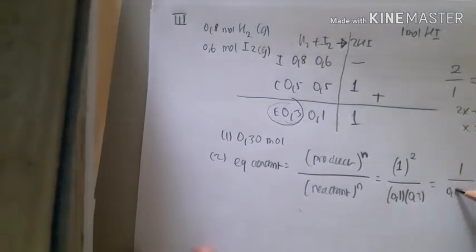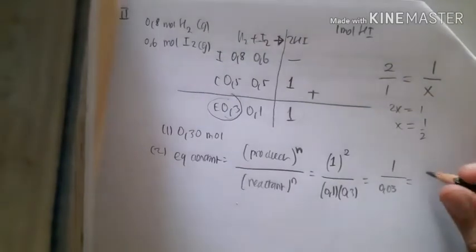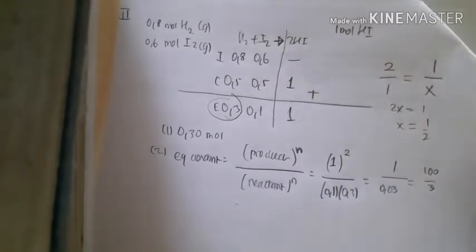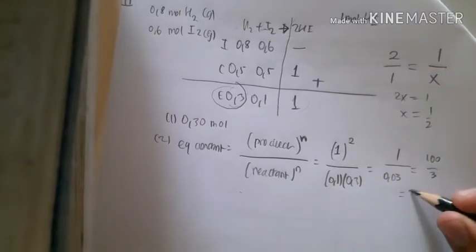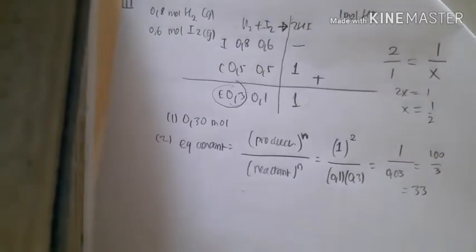This equals 1 over 0.03, which is 100 over 3. Converting to the second significant figure gives us 33. That is the answer.